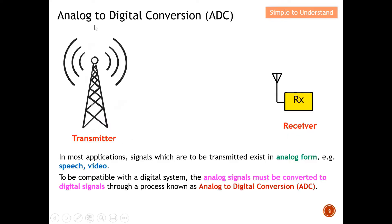Let's discuss what is analog to digital conversion and why we need it. In most applications, signals which are to be transmitted exist in analog form. For example, our speech — the voice that I'm talking to you now — exists in analog form, and also video, such as what you see on YouTube.